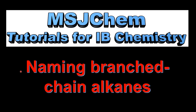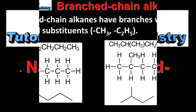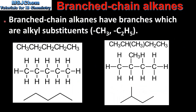This is MSJChem. In this video I'll be looking at naming branched chain alkanes. Branched chain alkanes have branches which are alkyl substituents. Alkyl substituents include CH3, which is a methyl group, and C2H5, which is an ethyl group.